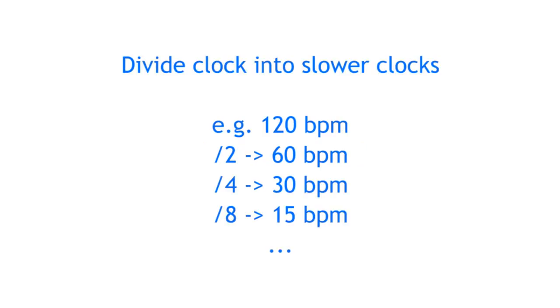Once you have a clock signal going into your modular, you can do lots of things with it. A good place to start is to divide the incoming clock signal to get multiple clock signals running in sync at different speeds.